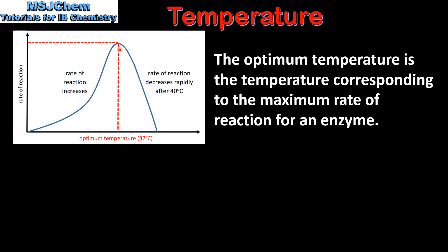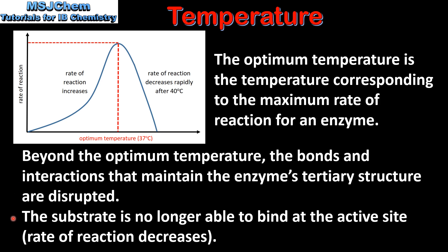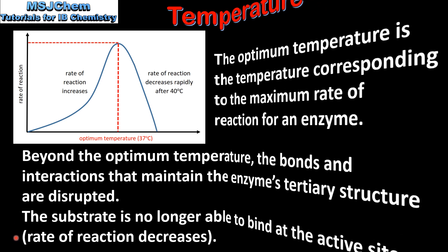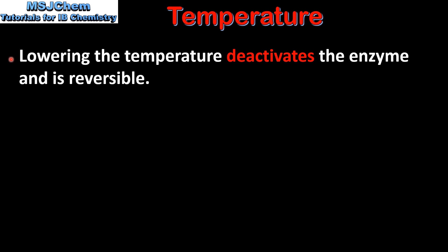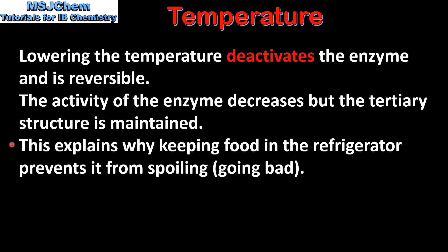As we can see from the graph, the rate of reaction decreases rapidly after about 40 degrees C. Beyond the optimum temperature, the bonds and interactions that maintain the enzyme's tertiary structure are disrupted. The substrate is no longer able to bind at the active site, therefore the rate of reaction decreases. Lowering the temperature deactivates the enzyme and is reversible. The activity of the enzyme decreases but the tertiary structure is maintained. This explains why keeping food in the refrigerator prevents it from spoiling or going bad.